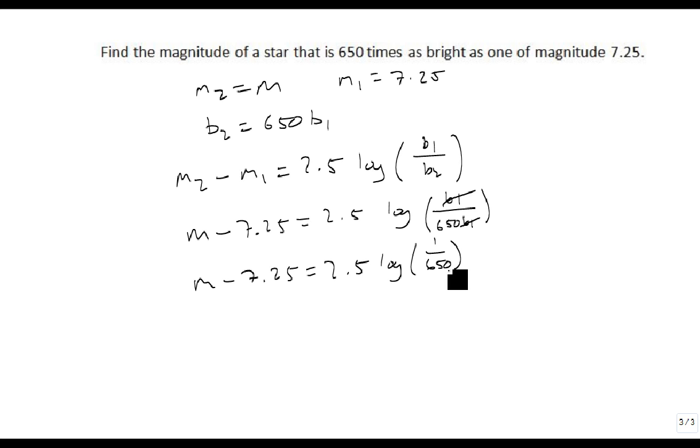So then we add the 7.25 over to the other side. And notice that 1 over 650 is 650 to the minus 1 power. So we can move that power down to the front. And M is equal to 7.25 minus 2.5 log of 650. So now all we have to do is figure out what this is.